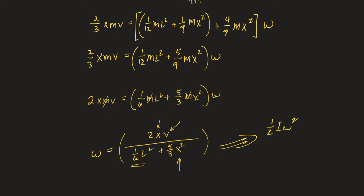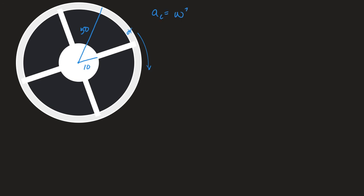We want the centripetal acceleration to be proportional to omega squared times r — not v squared over r since we're talking about the spin rate of the space station. We want this to equal g so the people experience an acceleration equal to that on Earth. Using 10 m/s² and radius 50, you get about 0.447 radians per second.